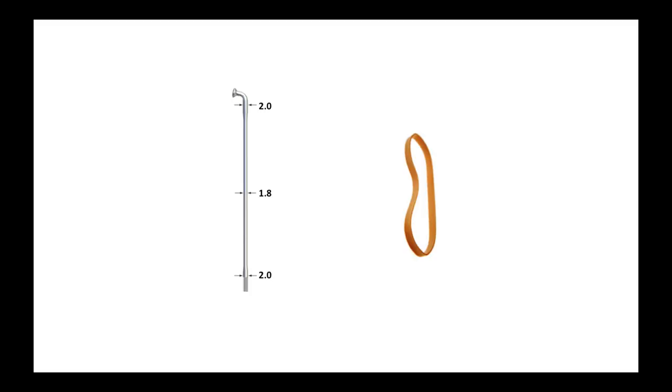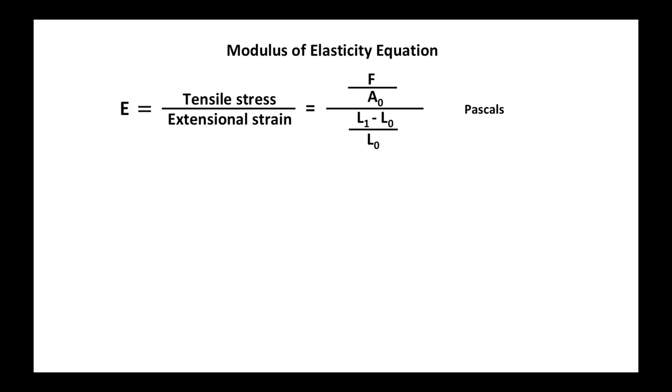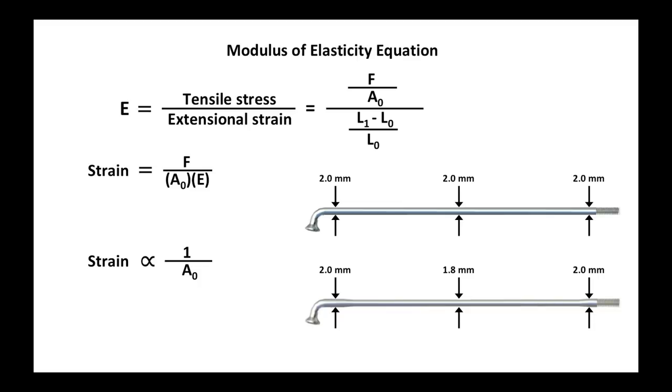Spokes are elastic, which is mathematically expressed as something called the modulus of elasticity. Without getting bogged down in math, let me just make the point that the strain, which is a measure of the stretching of a spoke as the tension changes, is inversely proportional to the cross-sectional area, meaning that the double butted spoke you see here at the bottom will stretch more when tension is put on it than the one at the top.